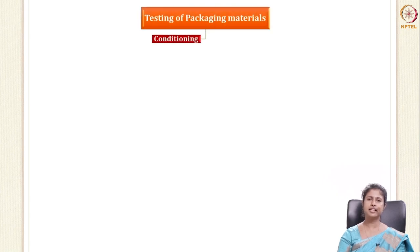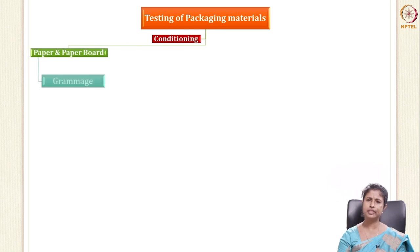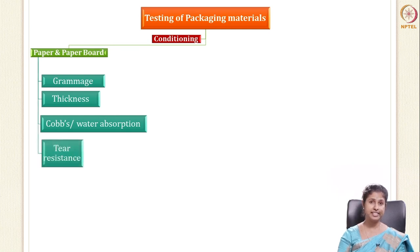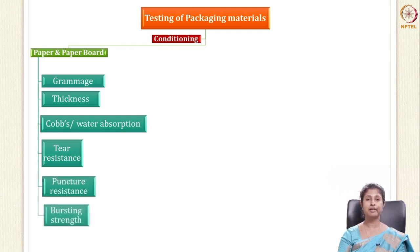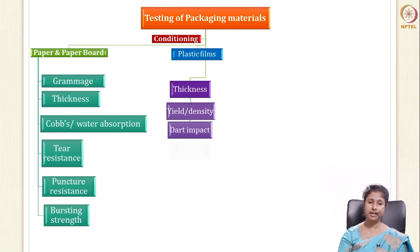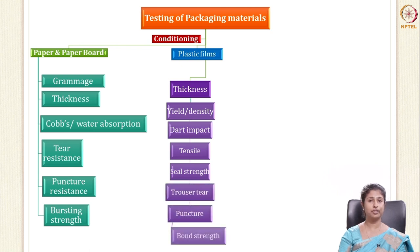When you test packaging materials, the first thing you do is conditioning. Whether it is paper or plastic, you condition it first. Different tests for paper include grammage, which is the weight of the paper or paperboard, thickness, Cobb test or water absorption, tear resistance, puncture resistance, and bursting strength. For plastic films we look at thickness, yield and density, dart impact, tensile strength, seal strength, trouser tear, puncture test, and bond strength.